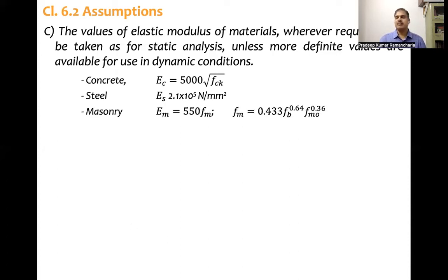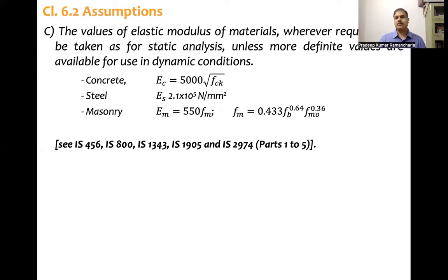And masonry, modulus of elasticity for masonry is given in IS 1893 itself. That is, em is equal to 550 fm. And fm is 0.433 fb raised to the power of 0.64 and fmo raised to the power of 0.36. What is this empirical expression? fb is strength of brick and fmo is the strength of mortar. For these values, code is suggesting IS 456 for concrete and 800 for steel, 1343 for pre-stressed concrete and other codes, 1905 and 2974, part 1 2 3 4 5. This is for machine foundations and this is for masonry buildings.